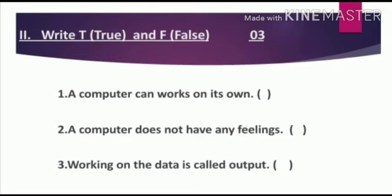Second, write T for true and F for false. This is of three marks. First, a computer can work on its own. Second, a computer does not have any feelings. Third, working on the data is called output.